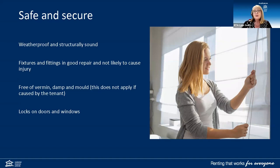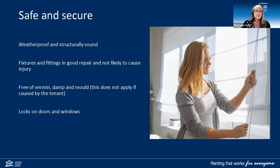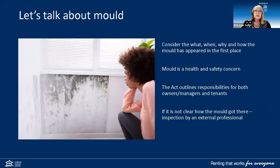A functioning lock or latch must be fitted to all external windows and doors to secure the premises against unauthorised entry. This applies to doors and windows, but does not apply where you would require a ladder to access. The purpose is to ensure the premises are secure — it doesn't mean a lock on every single window, just a functioning lock or latch. For privacy coverings: windows in all rooms where the tenant would expect privacy, such as bedrooms and bathrooms, must have a curtain, blind, or frosting. This doesn't apply if the window is obstructed by a fence, hedge, or tree.